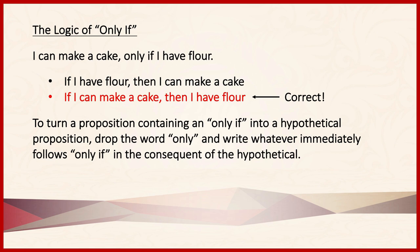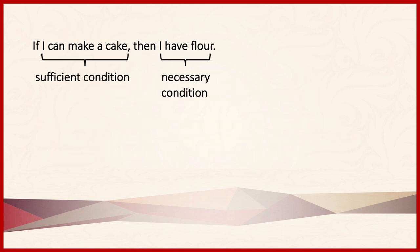This example reveals something interesting about hypothetical propositions — namely, that the parts of hypothetical propositions express necessary and sufficient conditions towards one another. Specifically, whatever appears in the antecedent is a sufficient condition for the consequent. So, being able to make a cake is sufficient to know that I have flour. Conversely, whatever appears in the consequent is a necessary condition for the antecedent — so having flour is a necessary condition for being able to make a cake.